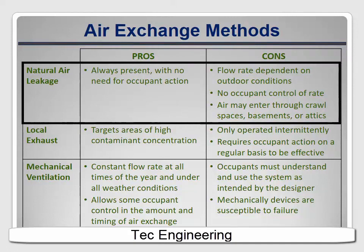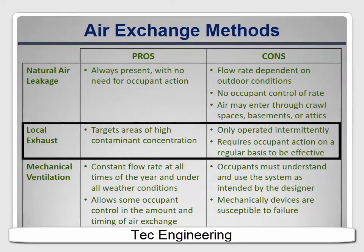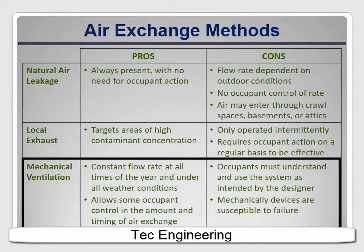Each of these types of ventilation has advantages and disadvantages. Natural leakage is always present and doesn't require any occupant action to make it occur. But it varies with weather conditions, so there are times of the year when it provides little air exchange. The occupants have no ability to control the rate or timing to suit their needs, and they can't control where the air comes from — it might be coming up through a damp crawl space. Local exhaust does very well at targeting big sources of contaminants, but it only runs when the occupants turn it on. If they don't use it regularly, it's not very effective. Mechanical whole building ventilation provides constant, year-round exchange and gives the occupant some control over the flow rate — but only if the occupants understand and use the system properly. In addition, mechanical devices are prone to failure and don't always get repaired promptly or correctly.